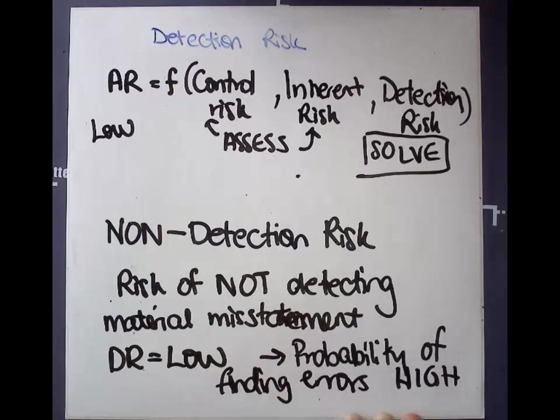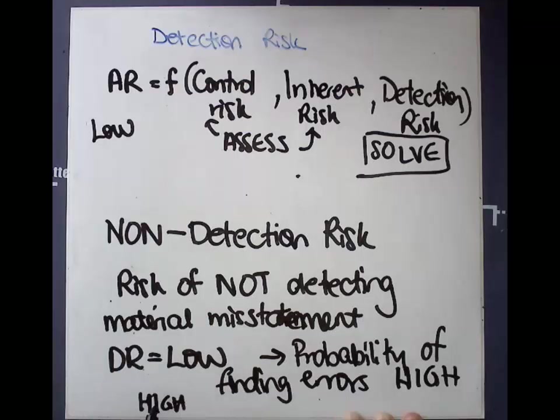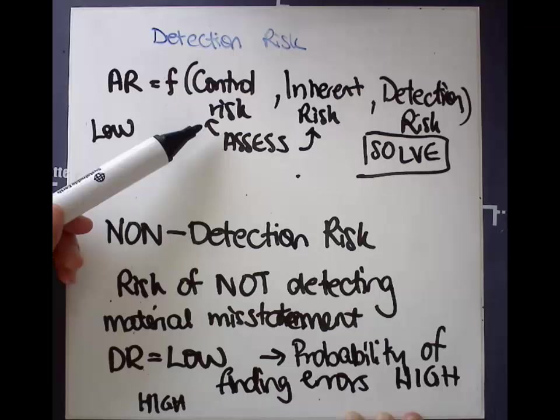And the exact opposite, if detection risk is high, then the risk of not detecting the material misstatements is high. And we would only do that in situations where there's low levels of control and inherent risk, because there's a low risk of there being a material misstatement anyway.